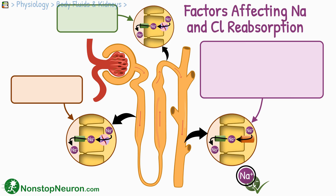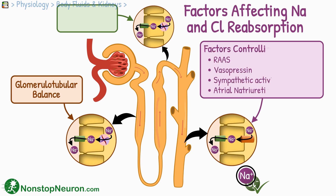Now coming to the factors. First we have glomerulotubular balance. Then we have a set of factors involved in the regulation of extracellular fluid volume. And in the end, we have a few miscellaneous factors. Now let's get into the details of each one of them one by one.